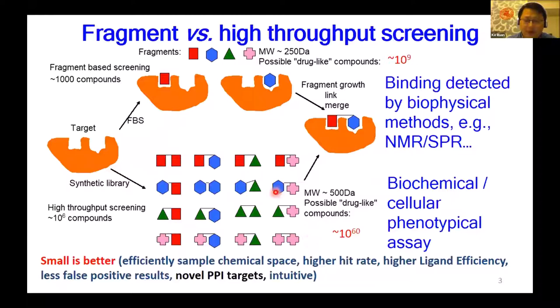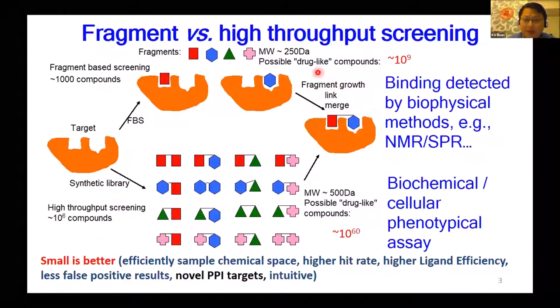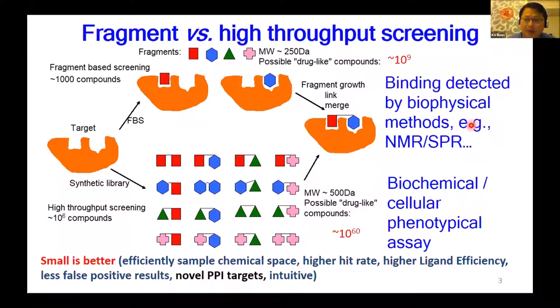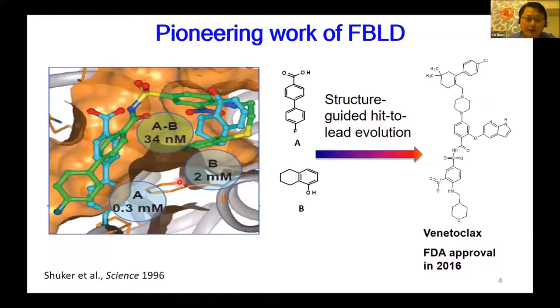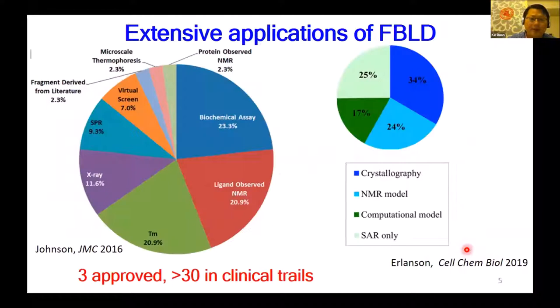Fragment screening also has some advantages. The first example was published about 20 years ago from a group at Abbott. Based on these fragments, a drug was eventually developed that was approved in 2017. So far we have three drugs already approved and over 30 candidates in clinical trials. Among these candidates, NMR has contributed significantly to this field compared to other methods.